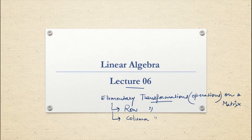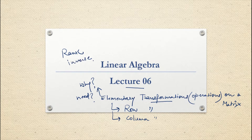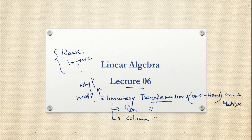Why are we going for these elementary transformations? What is the need? The reason is we have to perform many more operations on a matrix — sometimes we have to find the rank of the matrix, sometimes we have to find the inverse. For that, we need to have some equivalent matrices, so we have to perform these operations.